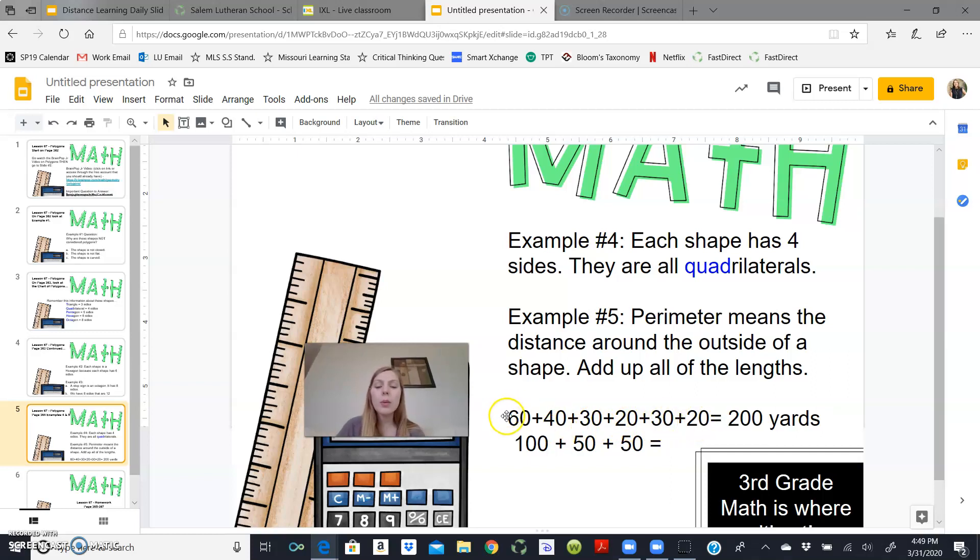So I have 60 plus 40 plus 30 plus 20 plus 30 plus 20. Now you would be able to tell me that 60 plus 40 is 100. And that is a great way to simplify this long problem. And you would also be able to tell me that 30 plus 20 equals 50. And I have another set of 30 plus 20. So really my addition problem is 100 plus 50 plus 50. And you would find that the perimeter of this playground is 200. But yet again, don't forget your label. You will need that. It is 200 yards.